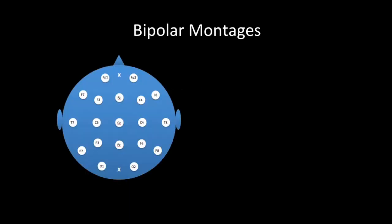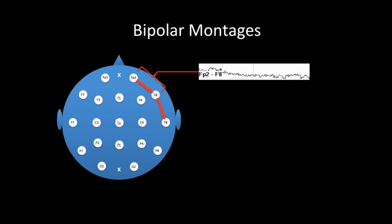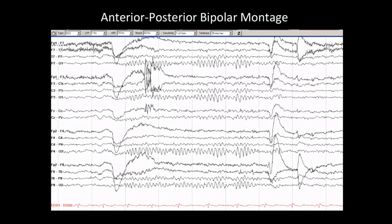EEG can be displayed in different ways, all known as montages. The most common type is a bipolar montage. Looking at the head from the top down, we display the difference between FP2 and F8 as a single tracing called a channel or derivation. Moving posteriorly, we look at the difference between F8 and T8 as another channel, continuing to generate a string of recordings from front to back called a chain — in this case, the right temporal chain. Several chains placed together form a single display, such as the anterior-posterior bipolar montage.